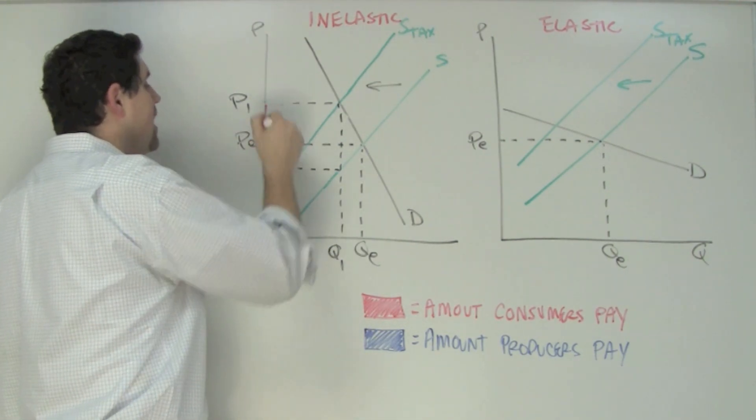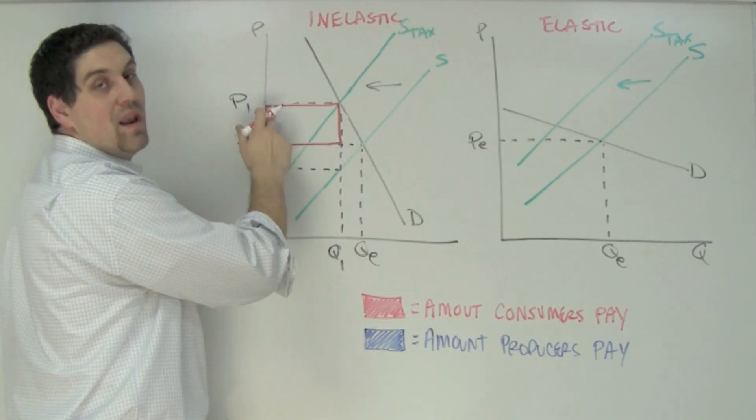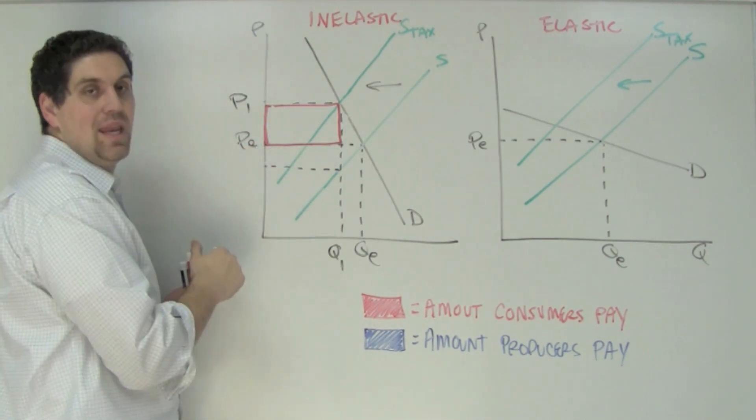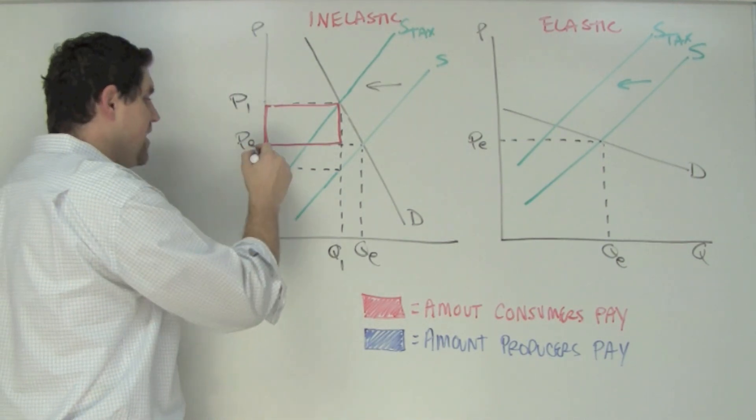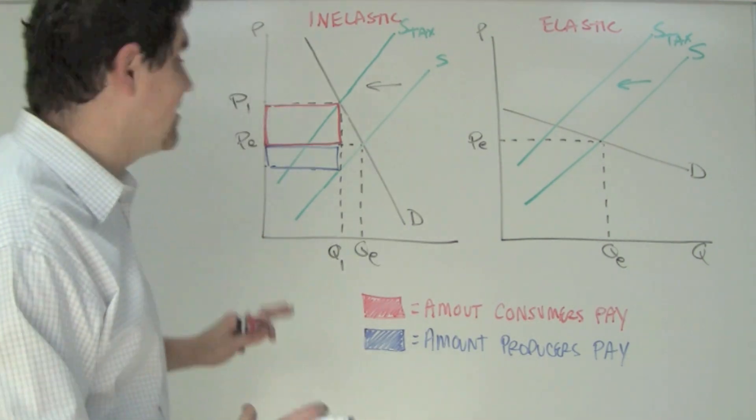The amount consumers pay is the price that went up from PE and over. Remember, this is the amount of the tax that consumers pay in higher prices. Since producers don't get PE anymore and they only get down here, then this represents total tax revenue that the producers have to pay. Take a step back and see which one of these is bigger.